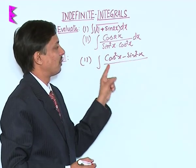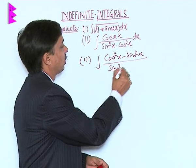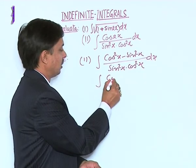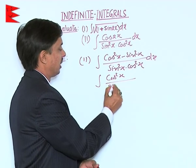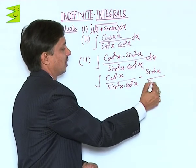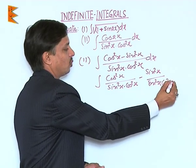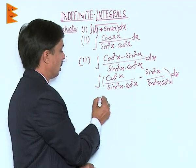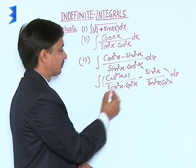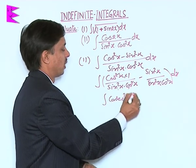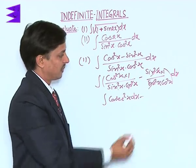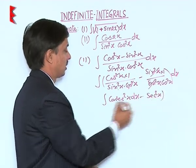We replace cos 2x with cos²x minus sin²x, divided by sin²x times cos²x dx. Isolating: cos²x divided by sin²x times cos²x minus sin²x divided by sin²x times cos²x. The cos²x terms cancel leaving 1 upon sin²x which is cosec²x, and the sin²x terms cancel leaving 1 upon cos²x which is sec²x.